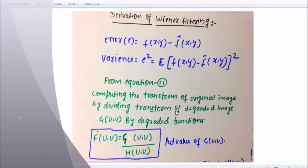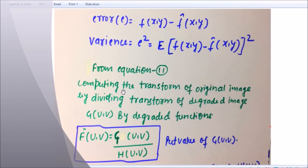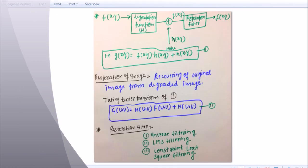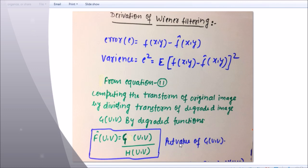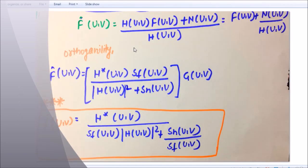We compute the transform of the original image by dividing the transform of the degraded image G(u,v) by the degradation function H(u,v). Substituting G(u,v) = H(u,v)·F(u,v) + N(u,v) into this expression, f-cap(u,v) becomes F(u,v) + N(u,v)/H(u,v). Up to this point, this is called inverse filtering.